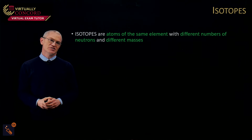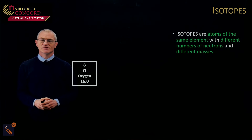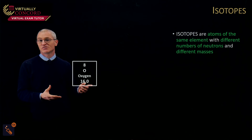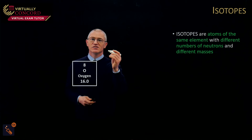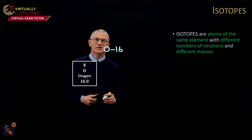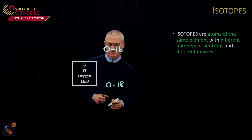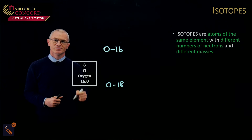Now for a required definition: isotopes are atoms of the same element with different numbers of neutrons and different masses. To understand isotopes, we look at two examples — oxygen-16 and oxygen-18.